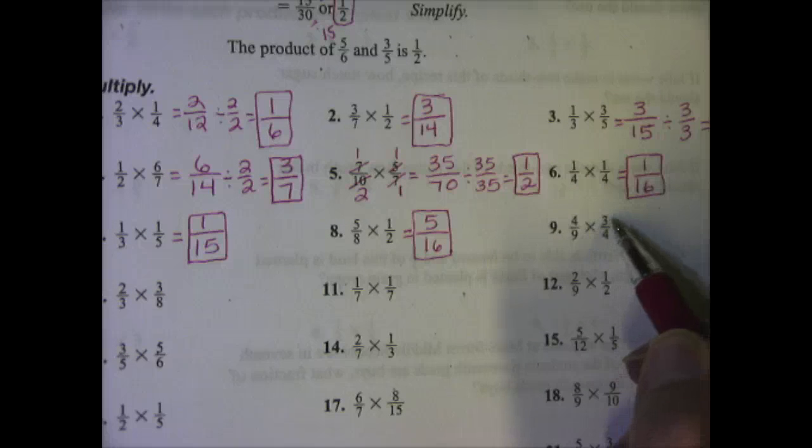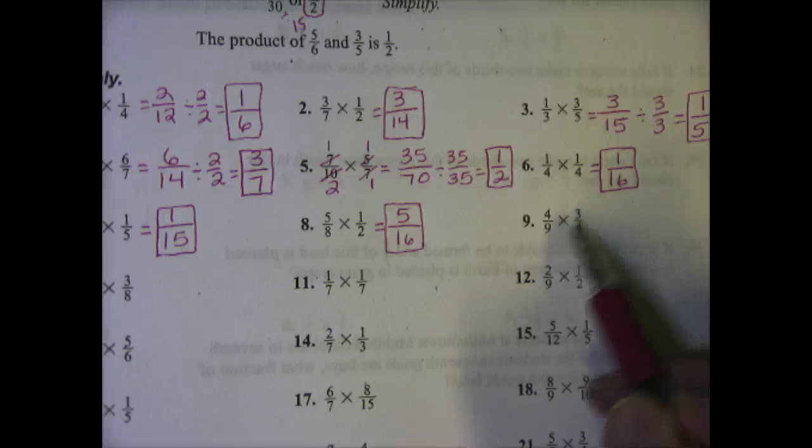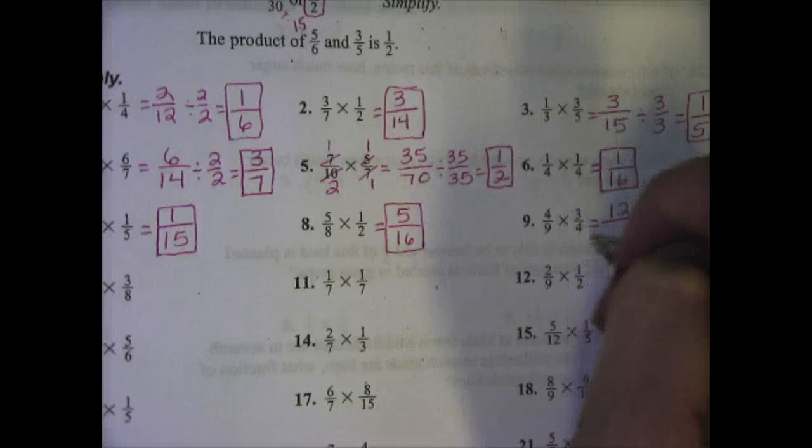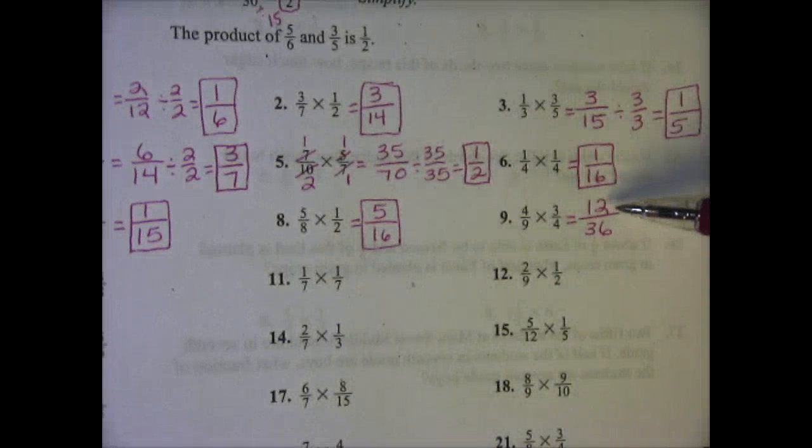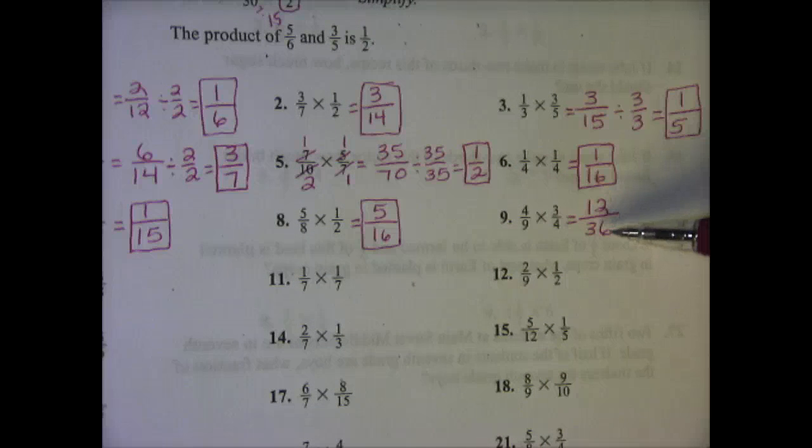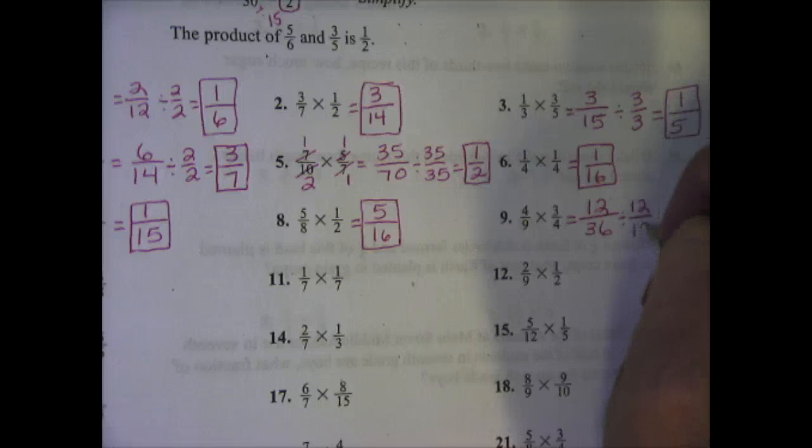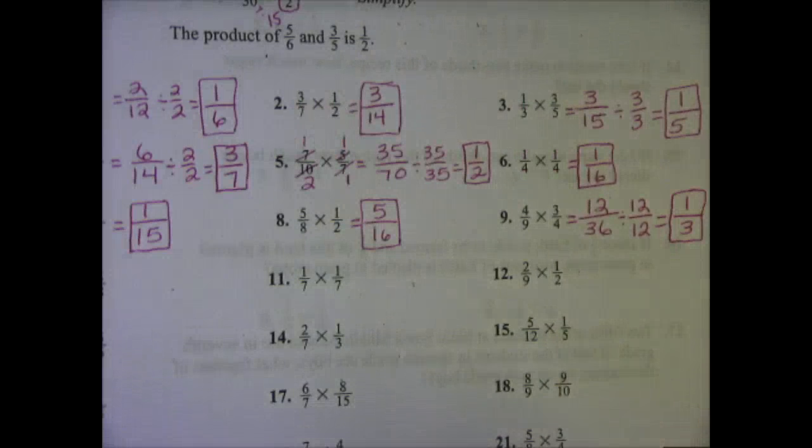4/9 times 3/4. This is one you could cross simplify if you wanted. But if you don't, 4 times 3 is 12, 9 times 4 is 36. They're both even, so I know they divide by 2, but I also know that the GCF is 12. They both are divisible by 12. So 12 divided by 12 is 1, and 36 divided by 12 is 3. The better you are at your multiplication facts, the better you will be at simplifying these fractions.